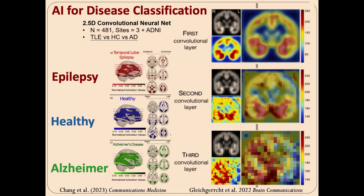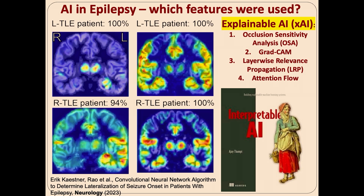If we swap the digits for MRIs — say epilepsy, healthy people, Alzheimer's — we can ask: does it work, and what features are useful? A CNN trained to identify which side is the seizure focus in medial temporal lobe epilepsy can tell you which parts of the brain — the hippocampus or maybe all of the brain — were helpful in making that decision. Interpretable AI is the subfield that takes a trained neural network and asks which features were helpful, using methods like occlusion sensitivity analysis, GradCAM, layer-wise relevance propagation, or attention flow for vision transformers.